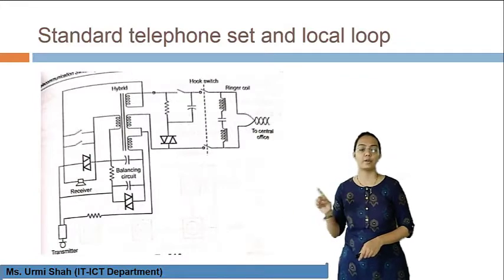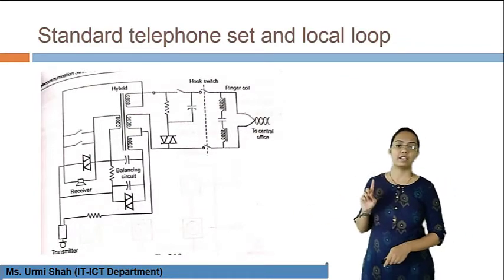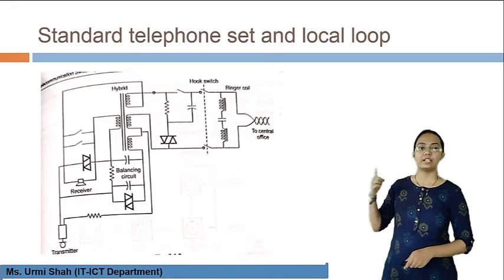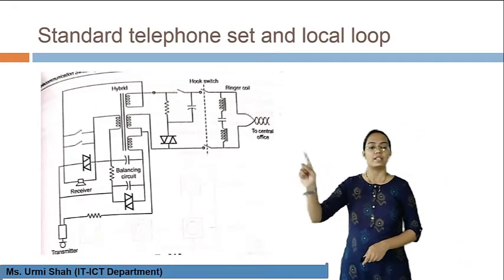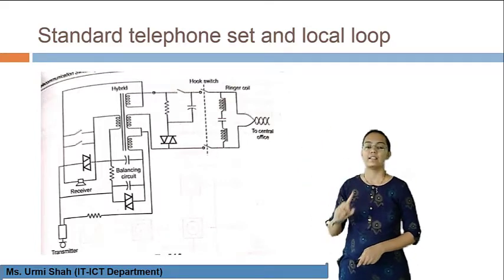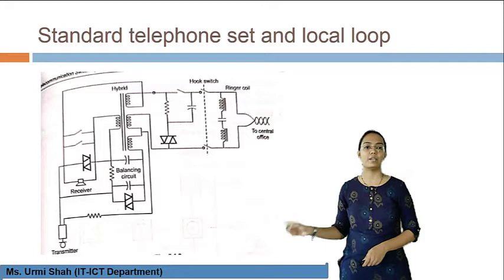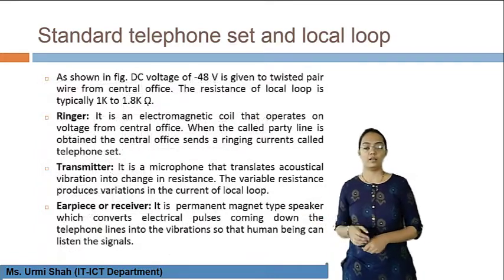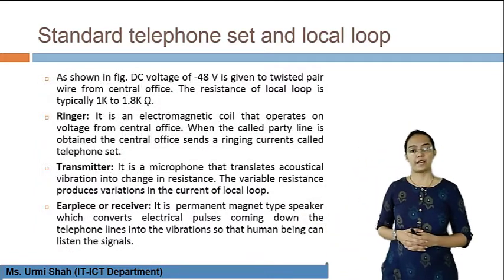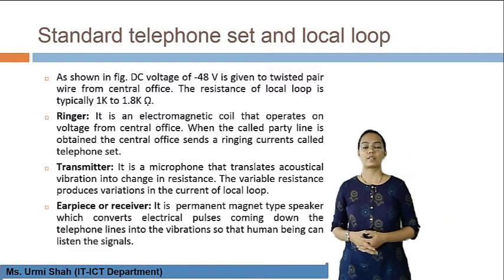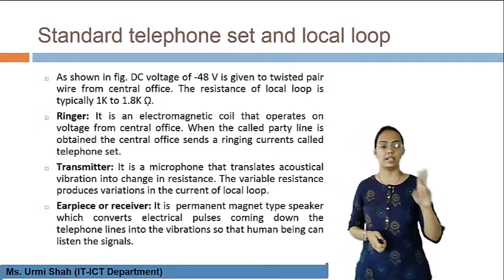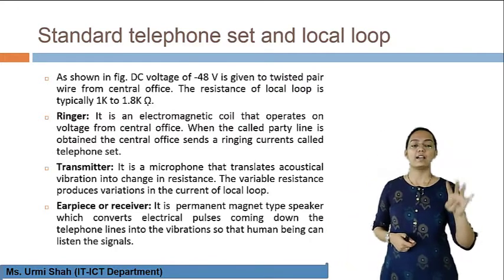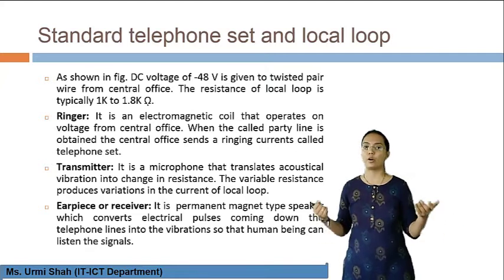In the telephone set or local loop system, we have various transmission line parameters — R, L, C, G — as well as diode circuitry, transmitter and receiver blocks, various switching units, a ringer coil, and a power supply of minus 48 volts from the central office. These are the various blocks of the standard telephone system: power supply, ringer coil, transmitter for sending signals, and earpiece or receiver for reception of signals.